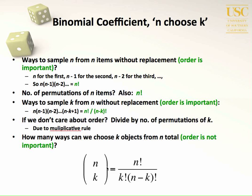Fisher's Exact Test is all based on the hypergeometric distribution, which is a discrete probability distribution. The hypergeometric distribution heavily uses the binomial coefficient. It's essential to understand what the binomial coefficient is in order to understand the hypergeometric distribution and Fisher's Exact Test.